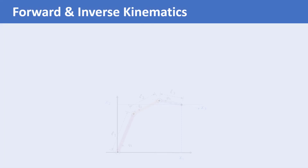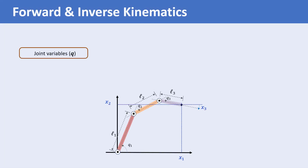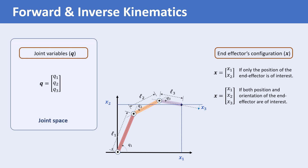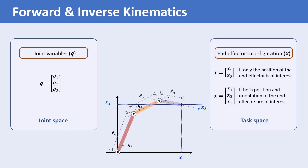Consider a robot with three joints. The joint variables are denoted by the vector q, which contains the angles of the three joints. The position of the end effector of the robot is also denoted by a two-dimensional vector x. So we can either represent the manipulator position in the joint space using the joint variables, or in the task space by representing the position of the end effector relative to the base frame. The problem of finding the end effector's configuration x using joint variables is called forward kinematics — a mapping from the joint space to the end effector coordinates or the task space.